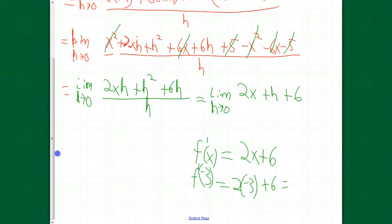Negative 3, that's negative 6 plus 6. We're looking at 0. So, this is the slope of the tangent line at an x value of negative 3. And so, this is kind of the same thing as what happened in class. We have a quadratic function.